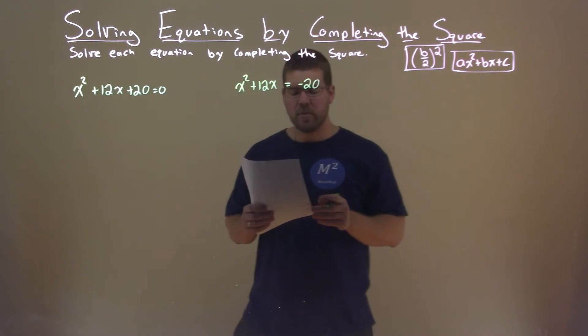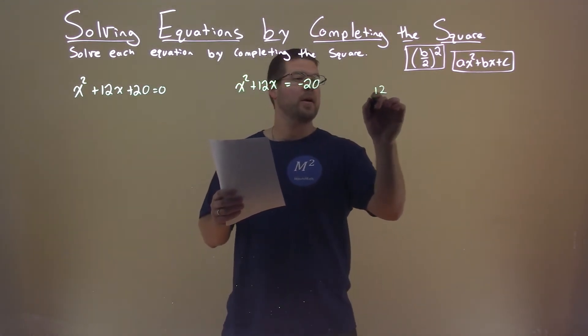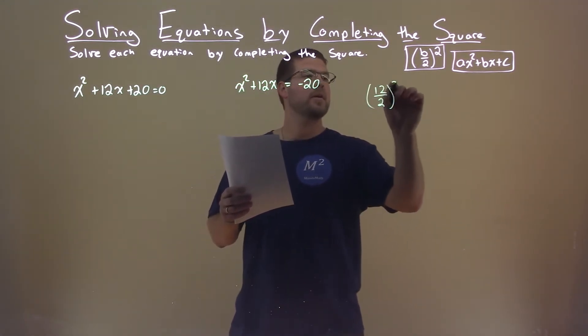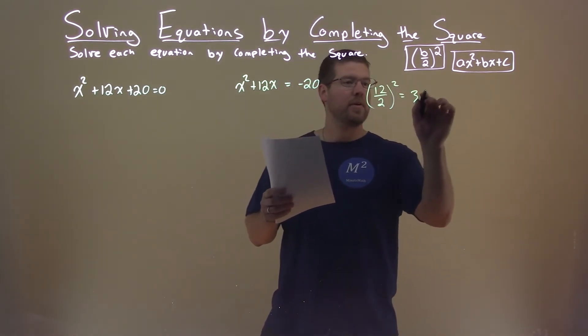Now, let's look at our b value here, b value being 12. We take our 12, divide it by 2, and we're going to square it. That comes out to be 36.